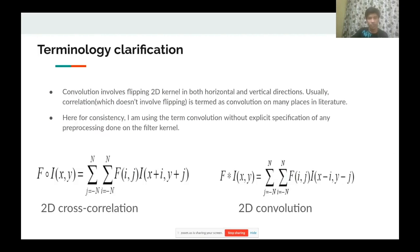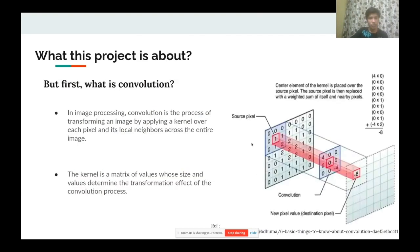Before moving further, I want to clarify some terminology. In the general sense, convolution involves flipping a 2D kernel in both horizontal and vertical directions. However, in literature the flipping part is often omitted and convolution is used interchangeably with correlation. For consistency, I am using the term convolution without explicit specification of any pre-processing done on the filter kernel.